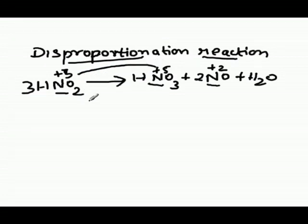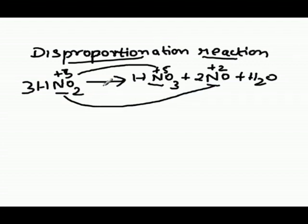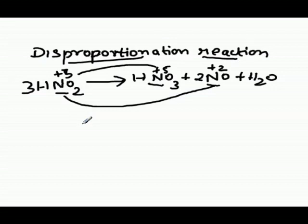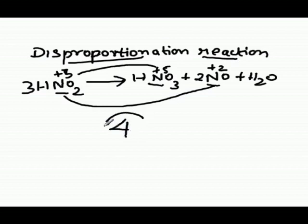Going from +3 to +5, there is an increase in the oxidation number, so this is oxidation. Going from +3 to +2, there is a decrease in the oxidation number, which means reduction. Therefore, the fourth option, which shows all the products — HNO₃, NO, and H₂O — is correct.